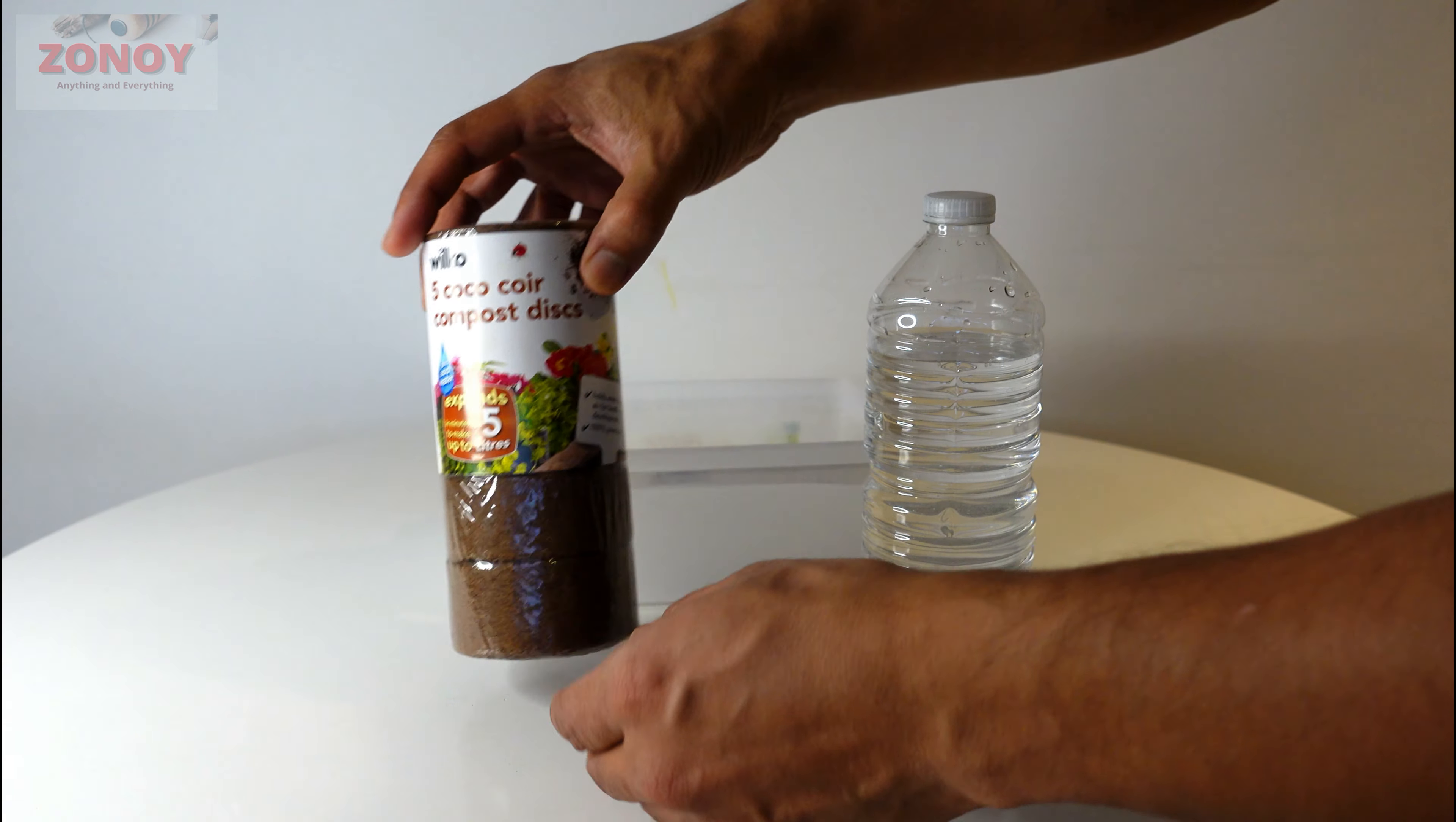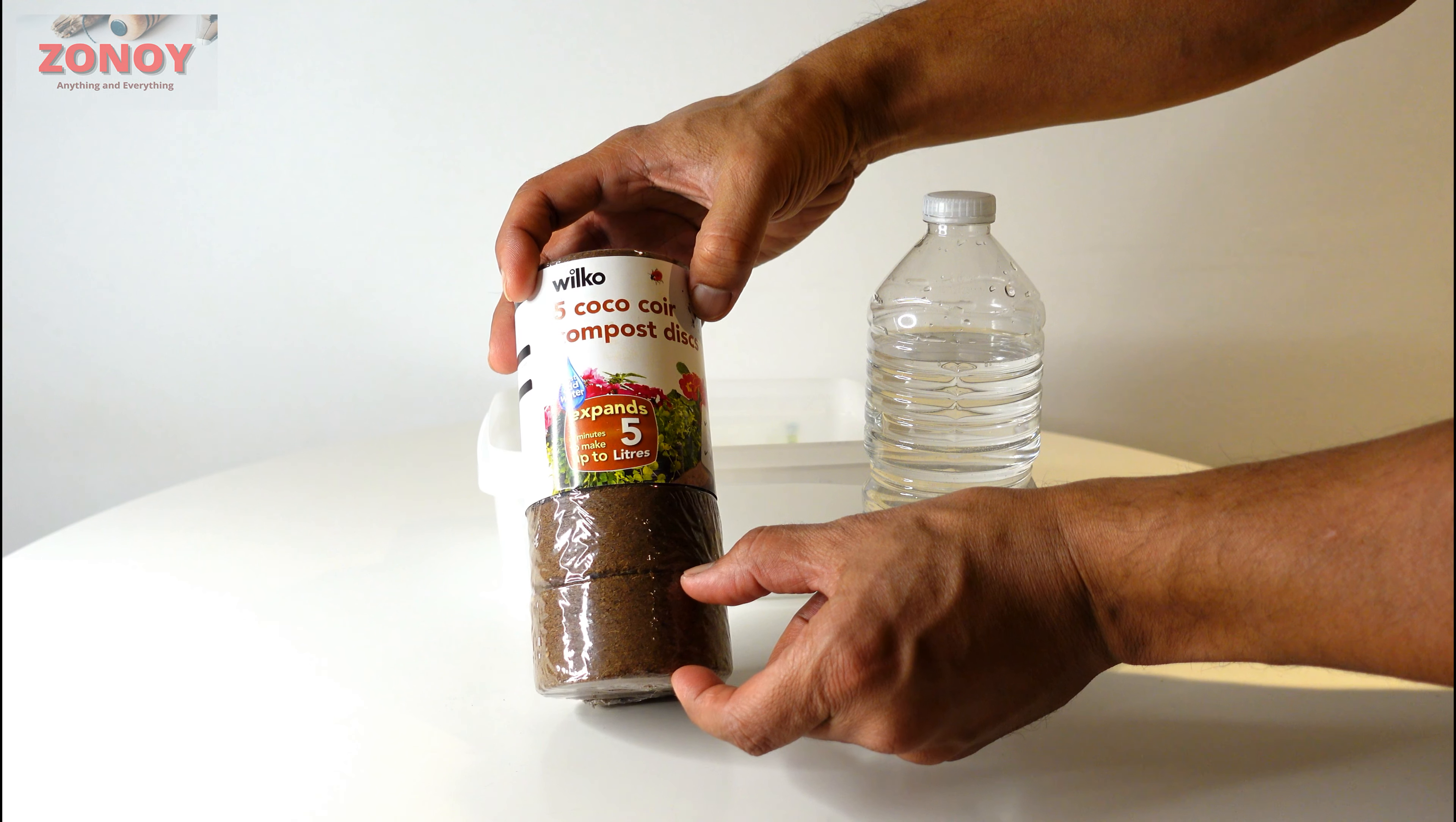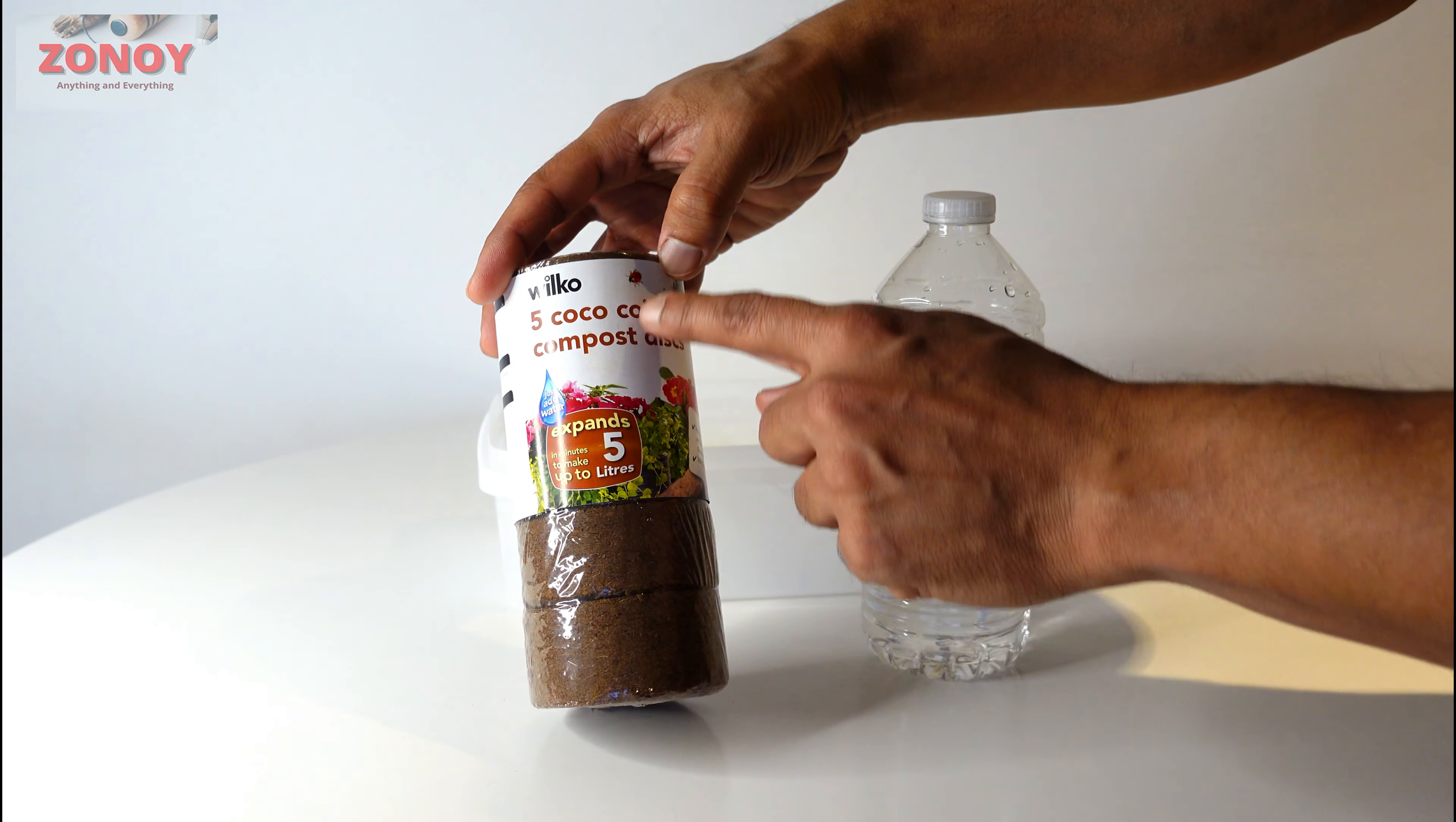So hi guys, I'm getting ready to do some planting and I thought I'd try these guys out. Little discs, compressed, dried compost and they're called, I'm not sure how you pronounce this, five coco-coa compost discs. There's five in there.